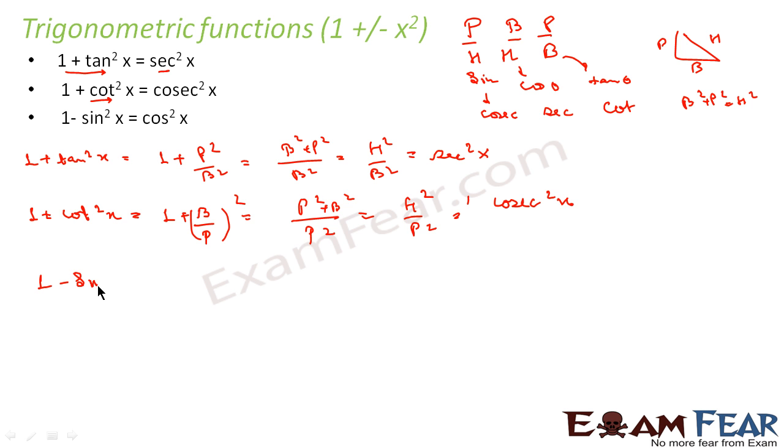Similarly, for 1 minus sin²x: sin equals P by H, so sin² equals P²/H². Therefore, 1 minus sin²x equals 1 minus P²/H², which equals (H² - P²)/H², which equals B²/H². Since B by H is cos, this becomes cos²x.